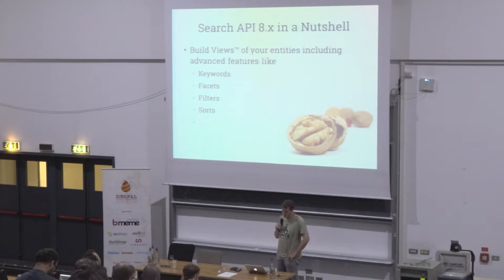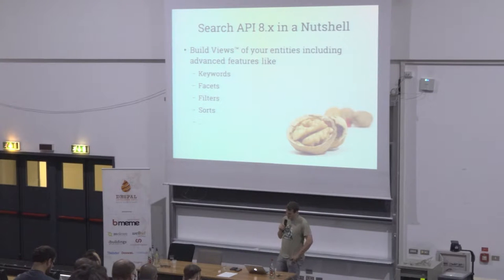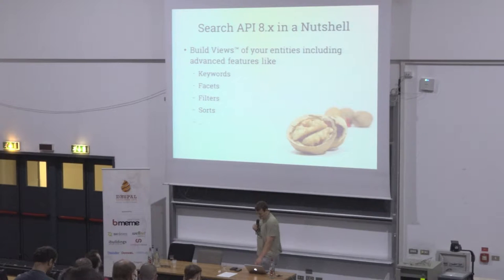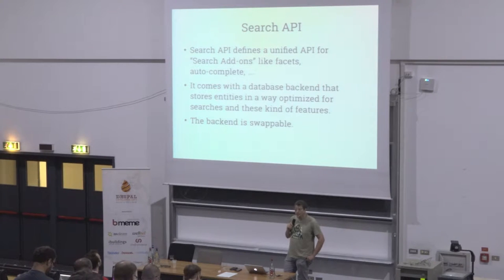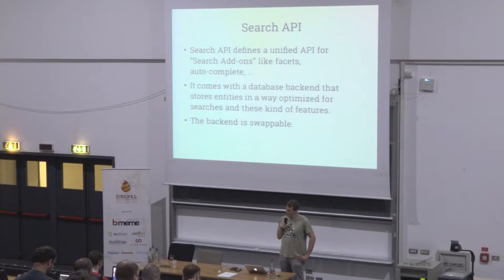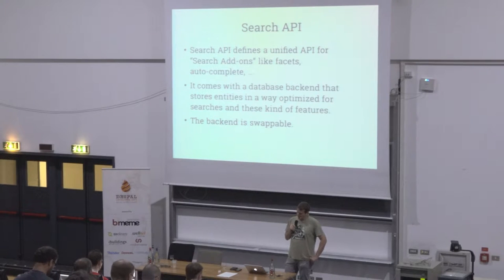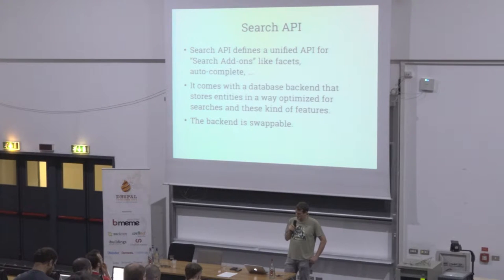Search API is useful to build views of your entities and add advanced features like keywords, facets, filters, and sorts. In fact, Search API offers some more things. As you can guess from the name, it provides an API that allows you to build more modules that leverage search. Facets, for example, is a separate module. There's also auto-complete suggestions for text inputs.